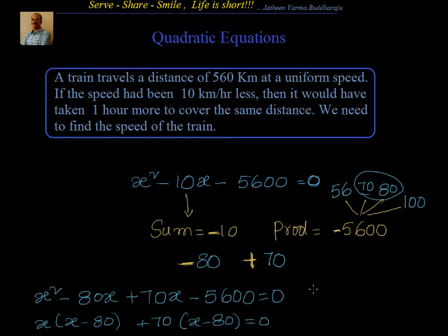Then it becomes x square minus 80x plus 70x minus 5600 equal to 0, which means x minus 80 multiply with x plus 70 equal to 0. If you equate them individually, I get x equal to 80 or x equal to minus 70. We know that speed cannot be negative, so this is ruled out.